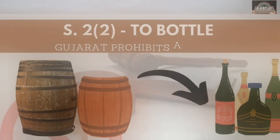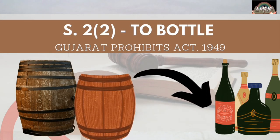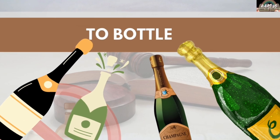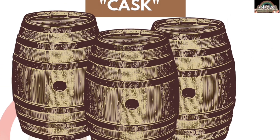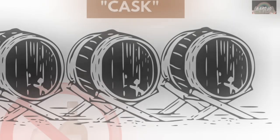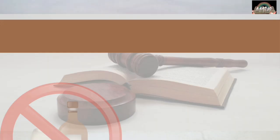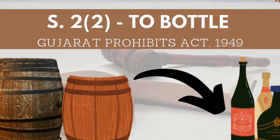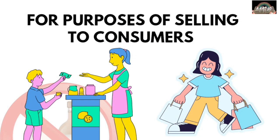The second definition is 'to bottle.' It means the transfer of any article or substance from a cask to a bottle, flask, pot, etc., for the purpose of selling such article or thing. A cask is a big vessel or barrel made especially for storing liquor in large quantities. So 'to bottle' means transferring liquor from a big barrel to a bottle for the purpose of selling that liquor to consumers.